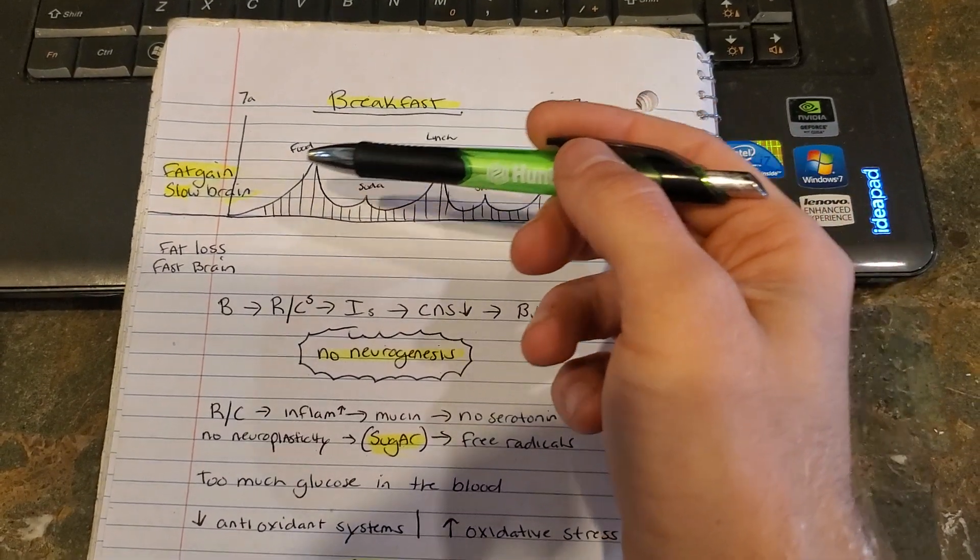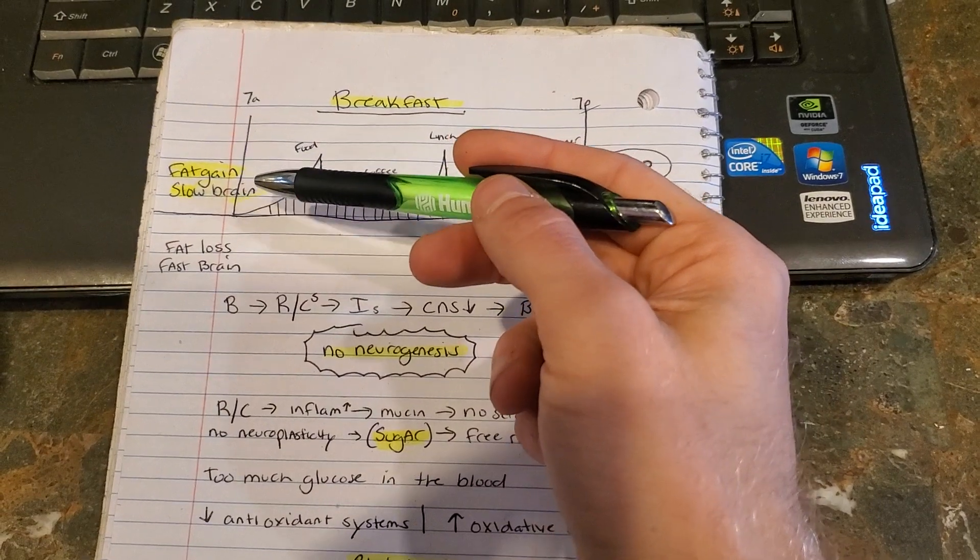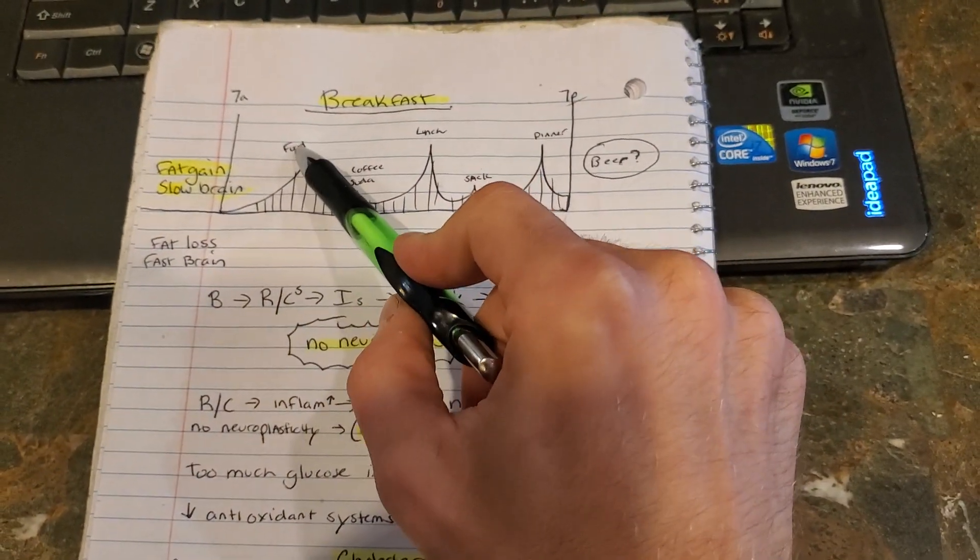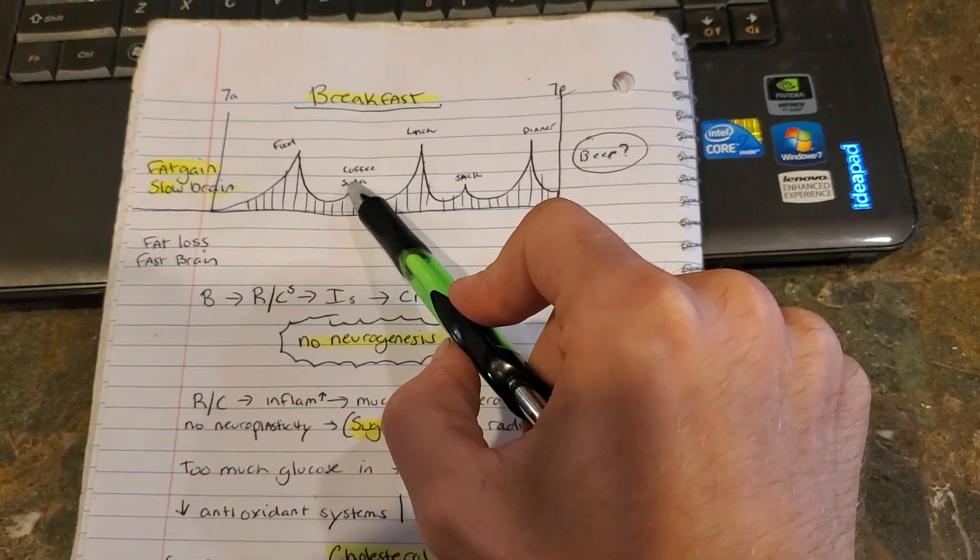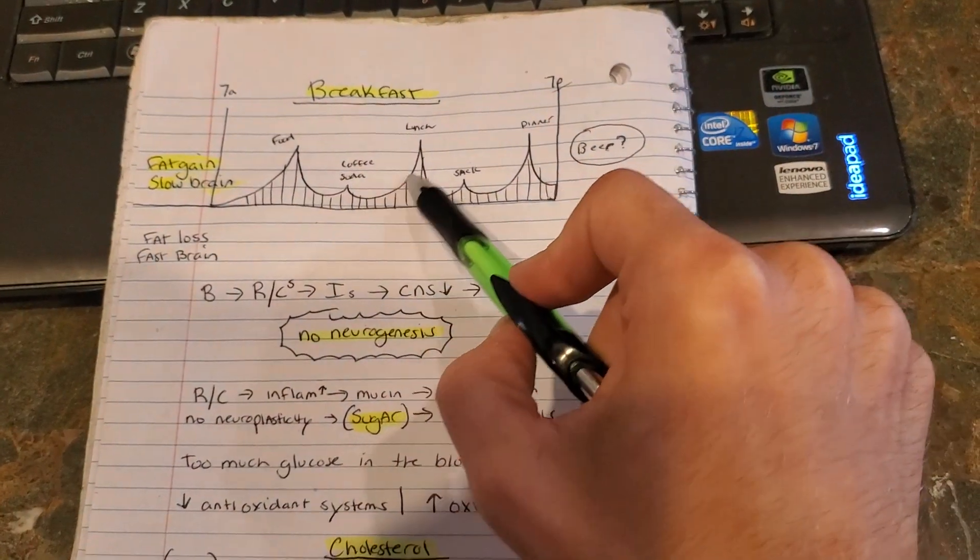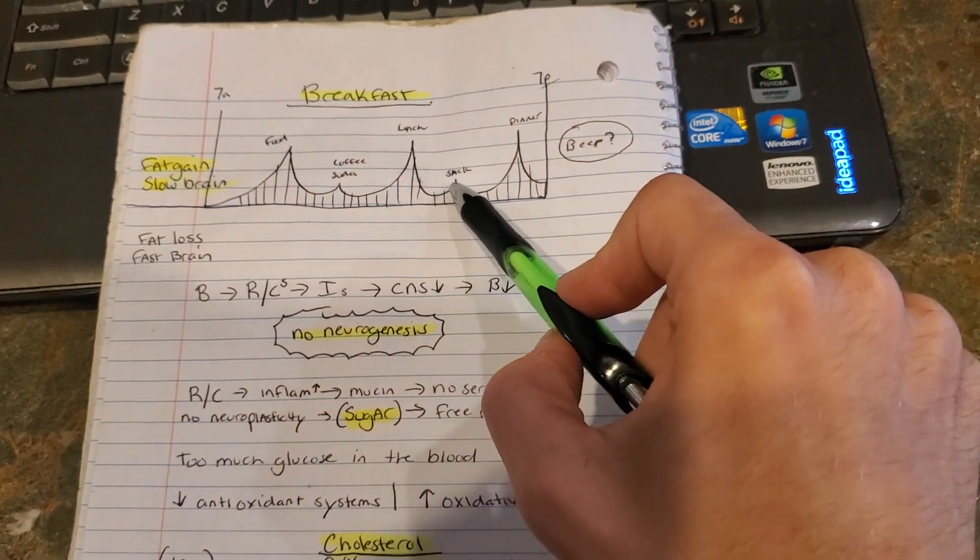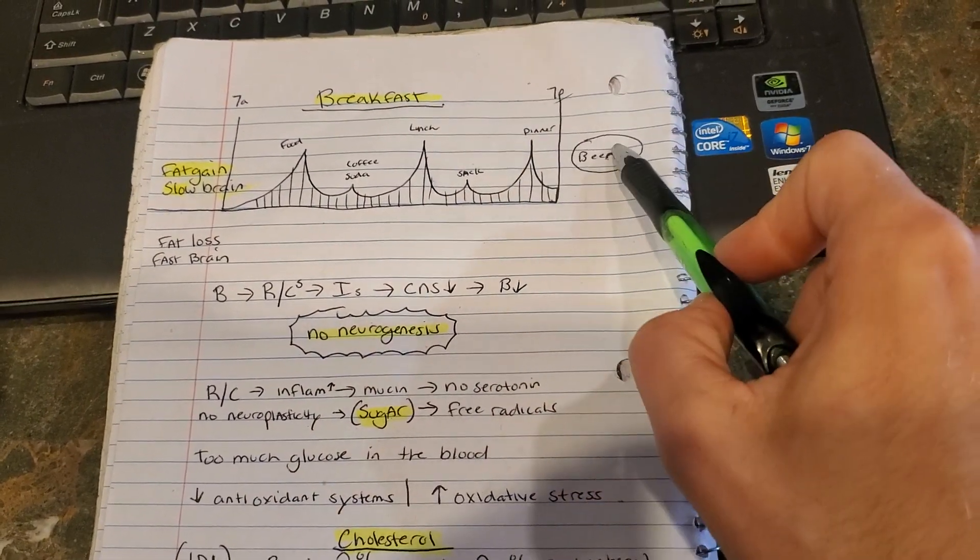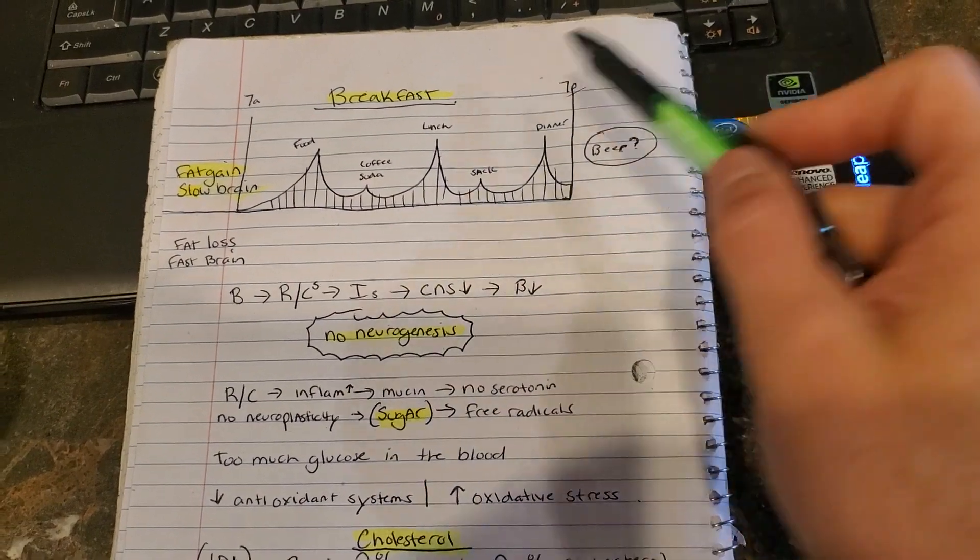So if you're an avid consumer of breakfast, fat gain equals slow brain. So food, you're spiking your insulin right here, right? That's your breakfast. If you have a coffee or a soda or something, a creamer, you're spiking your insulin again. Lunchtime, spiking your insulin. After that, you're probably having a snack. Then you're going to eat dinner, and then maybe beer after? Completely destroying yourself.